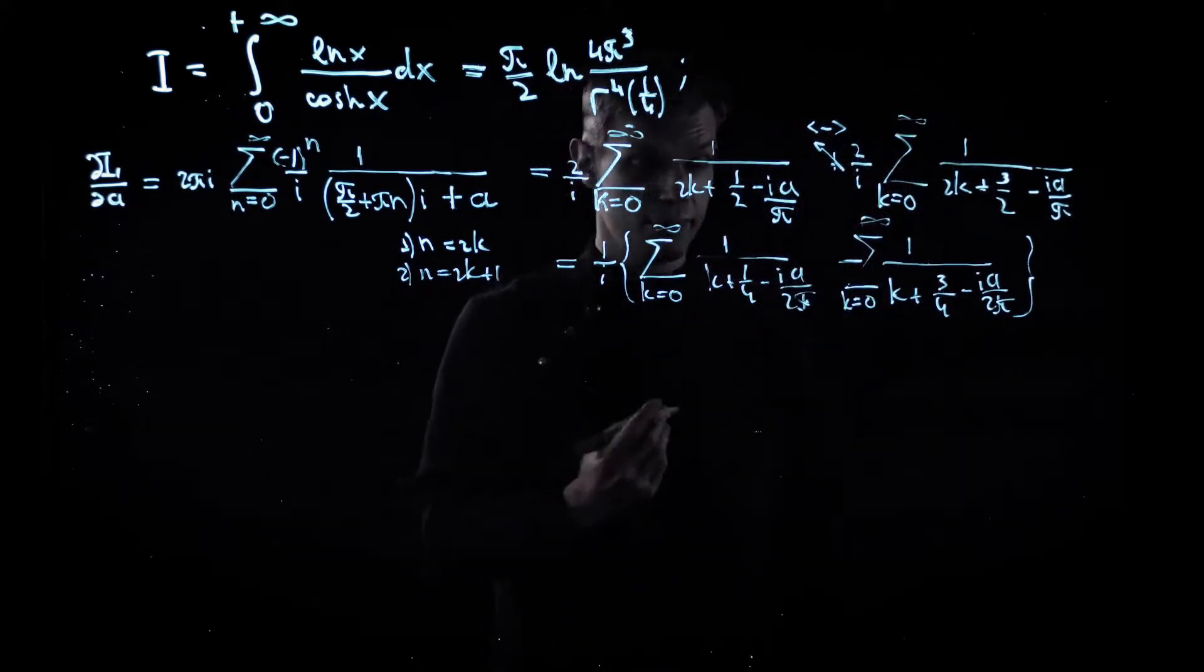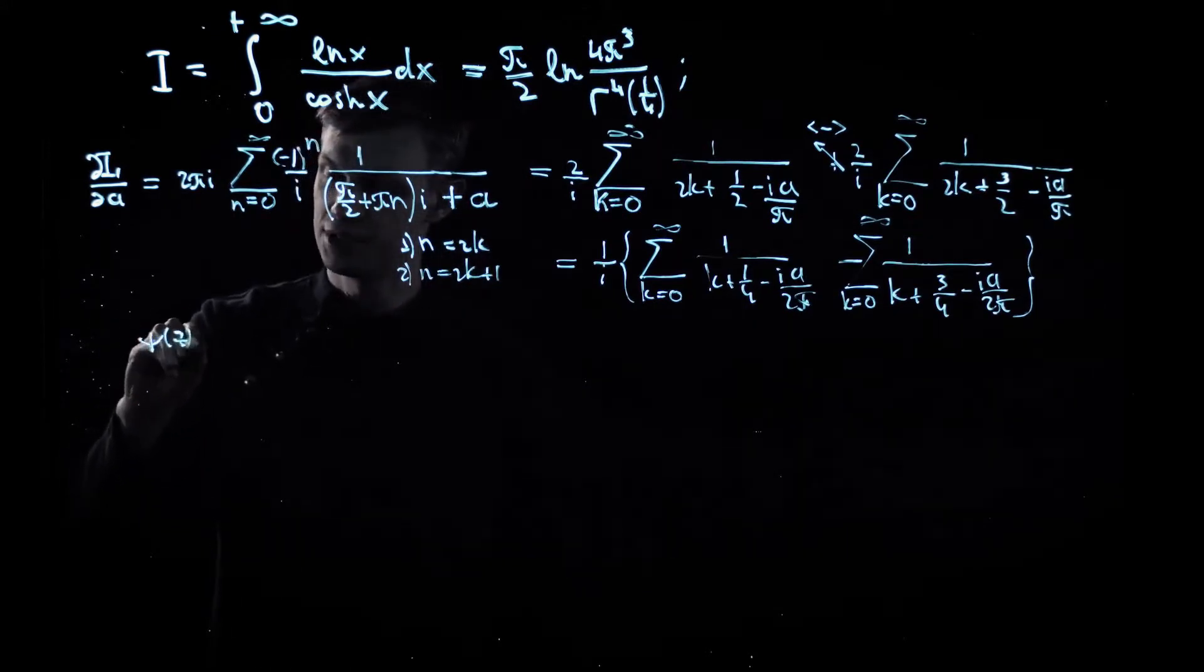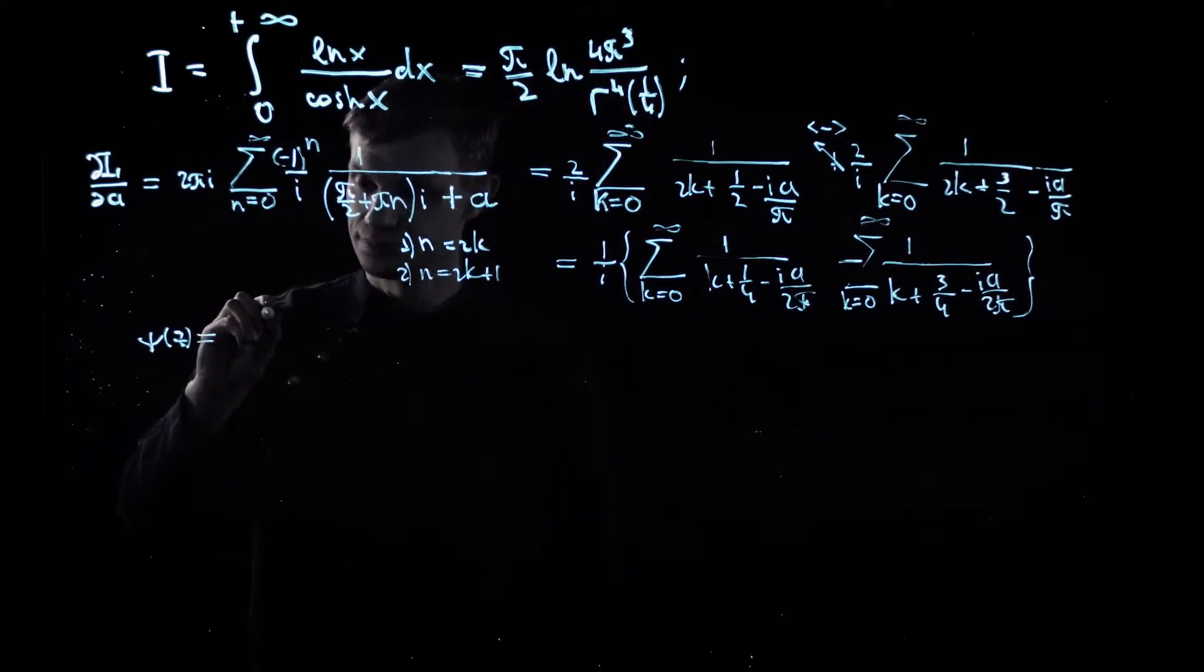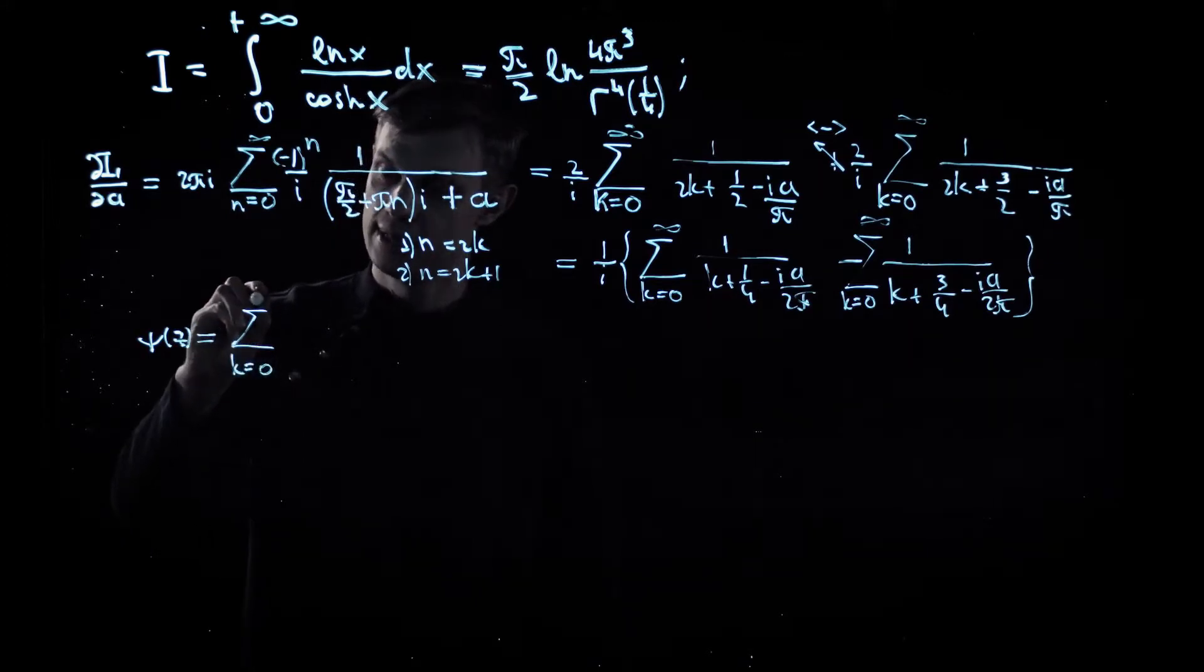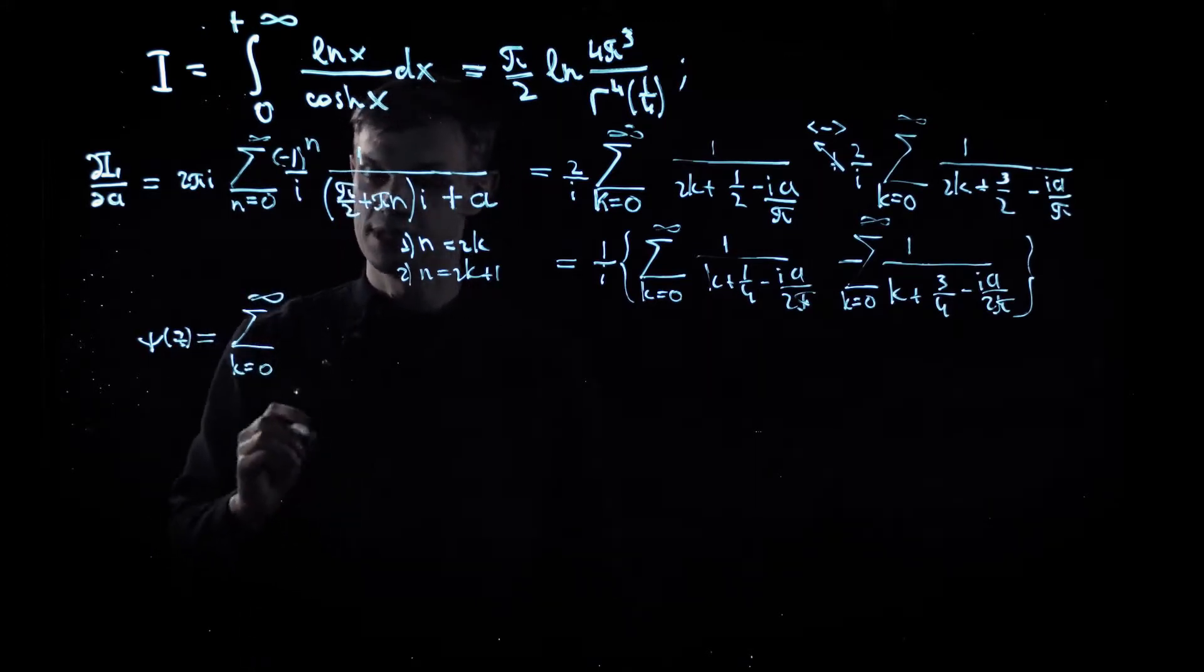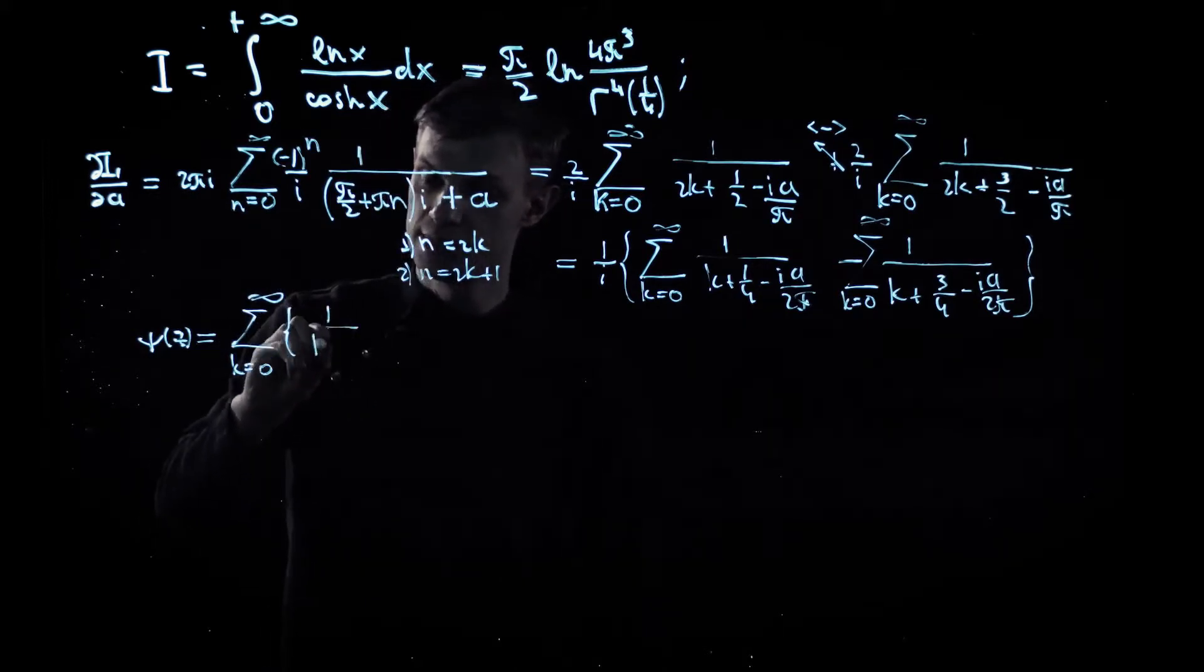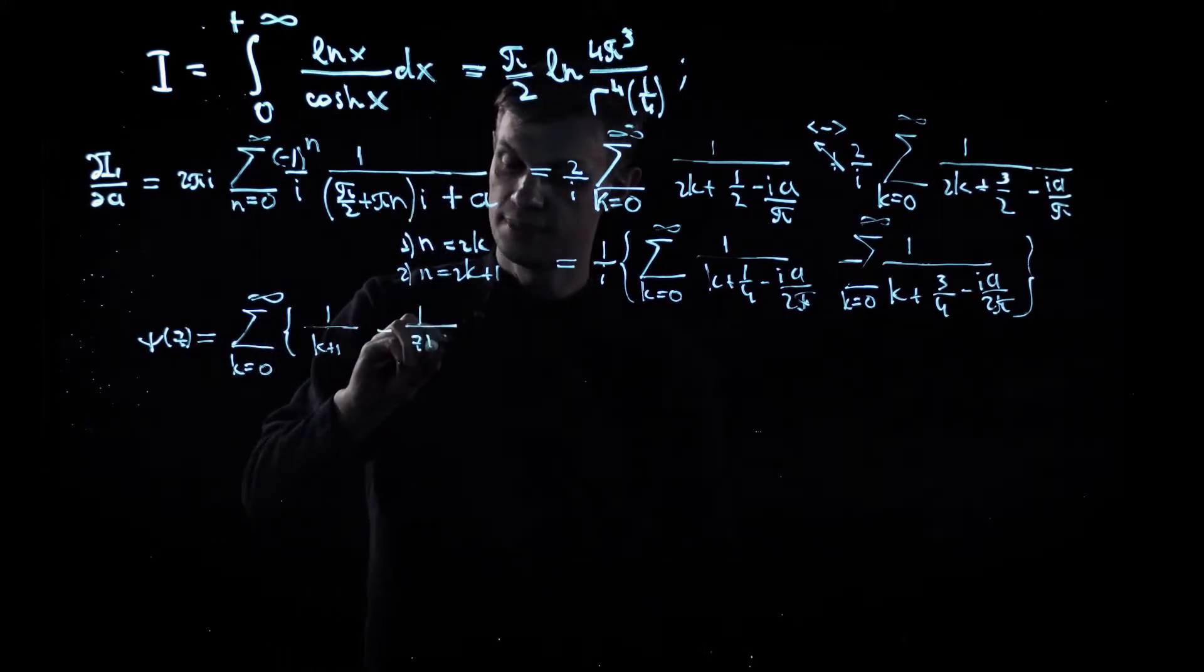As you remember, there is the following property expression for Euler's digamma function, namely it can be expressed as the sum from zero to plus infinity of the following difference of two expressions: one over k plus one minus one over z plus k.